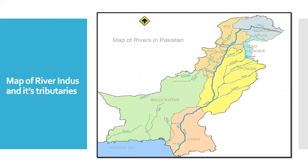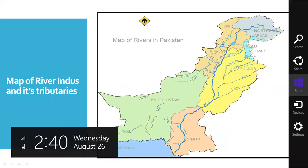Look at this map, students. This map shows all the tributaries and also River Indus. This dark blue color line you can see here, starting from the top, this river is flowing down through the plains of Punjab and Sindh. In the end it dumps into the Arabian Sea. On its east you can see the four eastern tributaries — Jehlam, Chenab, Ravi, and Satlaj. On the west you can see Swat, River Kabul, River Zob, and River Dasht.